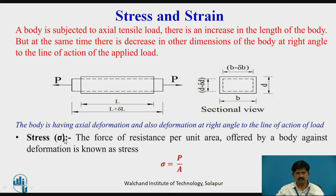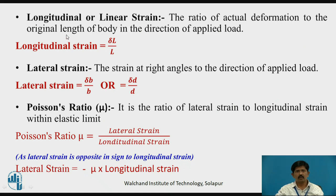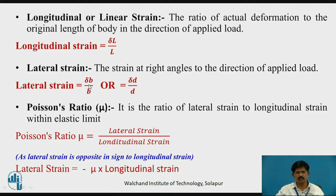Stress is denoted by sigma — it is the force resistance per unit area offered by a body against deformation, given by sigma = P/A. Longitudinal or linear strain is the ratio of actual deformation to the original length of the body in the direction of applied load, given by delta L / L. Lateral strains are at right angle to the direction of applied load, so lateral strain equals delta B / B or delta D / D.